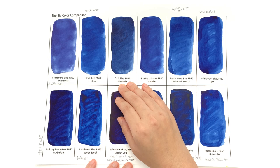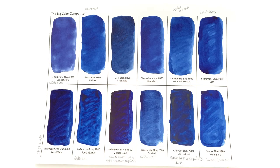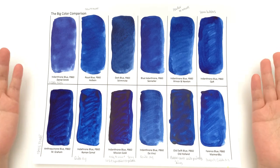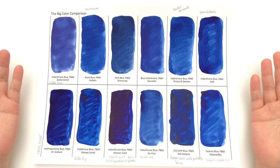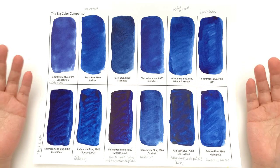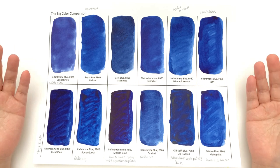First up is the hues, and Indanthrone Blue should always be this smooth, high intensity, high tinting strength blue that is more of a reddish blue rather than a greenish blue.